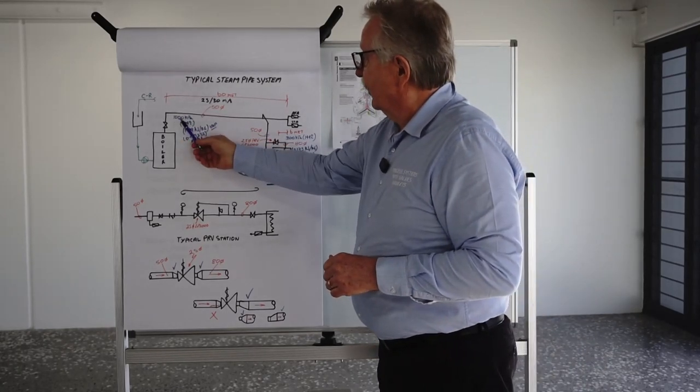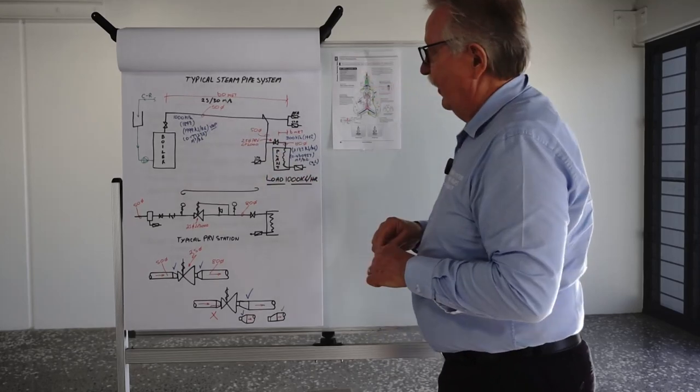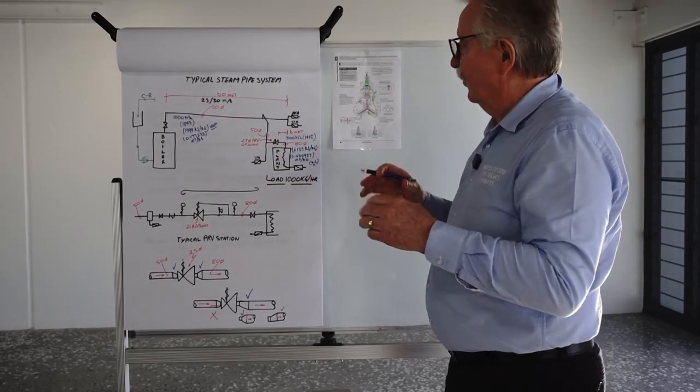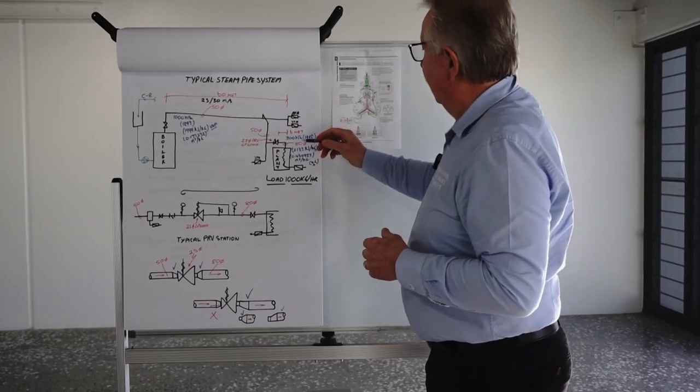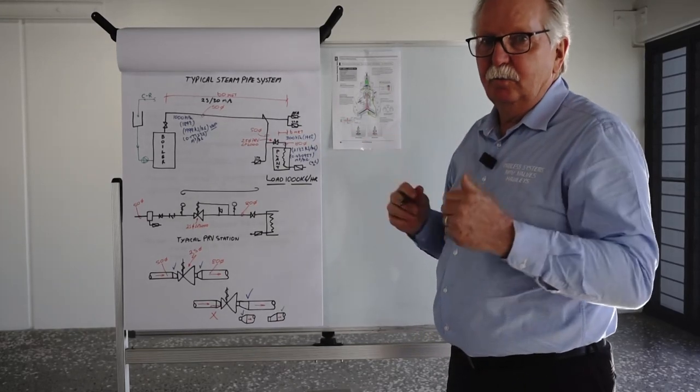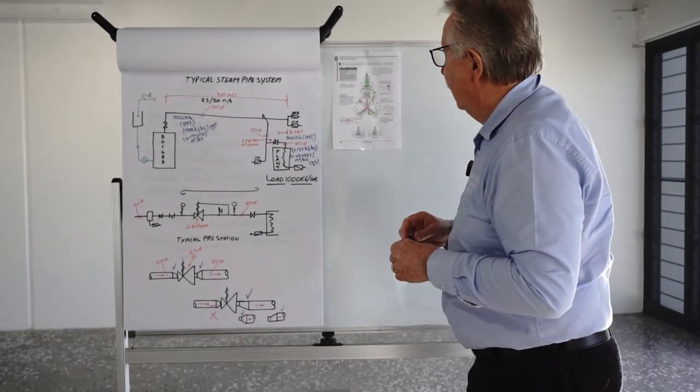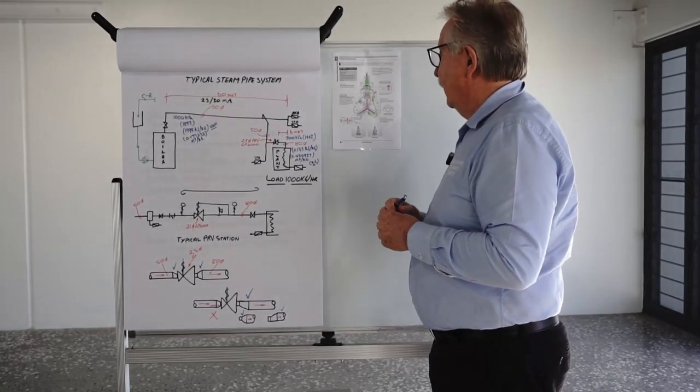With 1000 kPa you have a certain specific volume equated to your steam and with 300 kPa you have a certain specific volume equated to your steam. If you refer to your steam tables you will be able to see that difference.